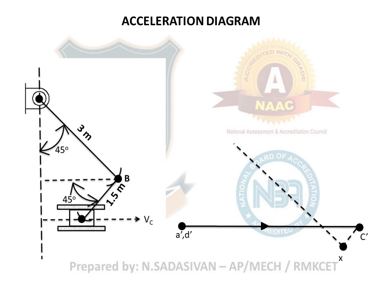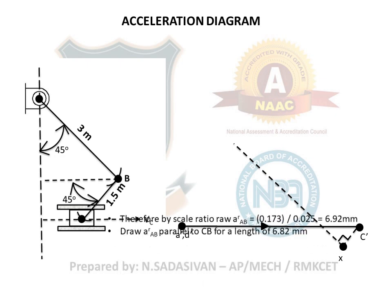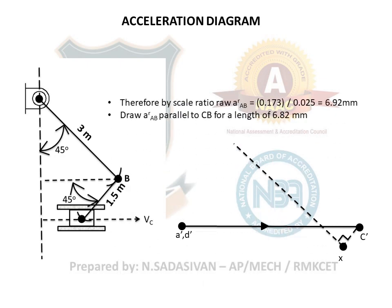The tangential component is perpendicular to the radial component. We do not know its value, but we know it is perpendicular. Therefore, draw a perpendicular indefinite dotted line from point X. The tangential component line must be perpendicular to the radial component already drawn. Make sure it is exactly perpendicular.